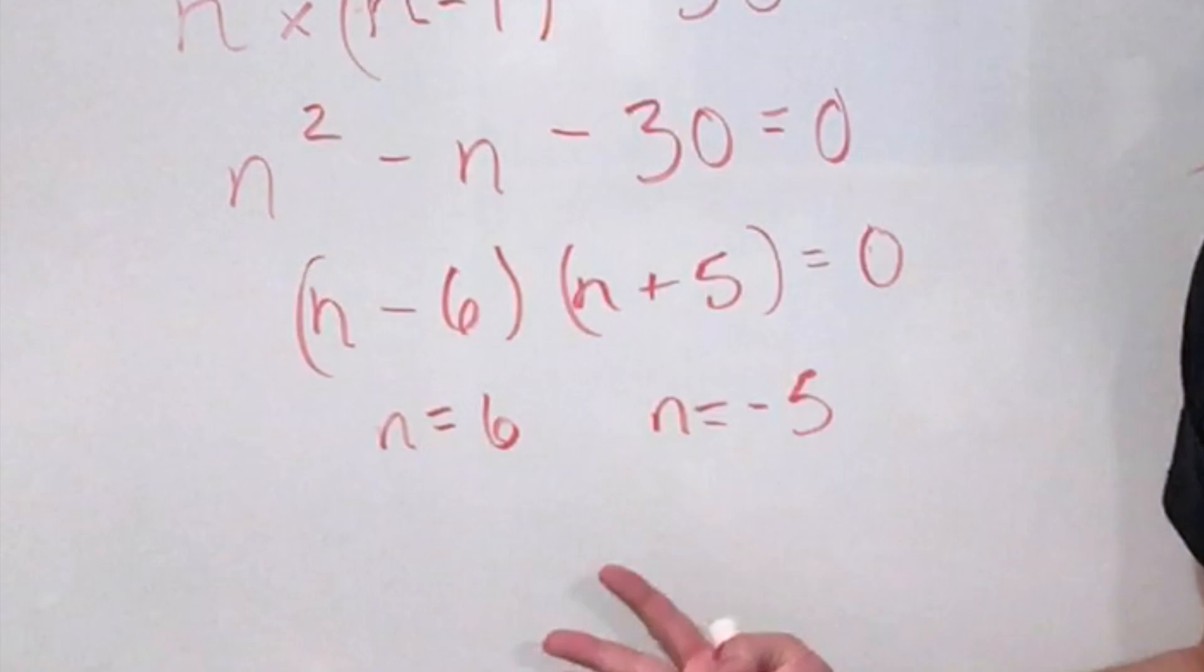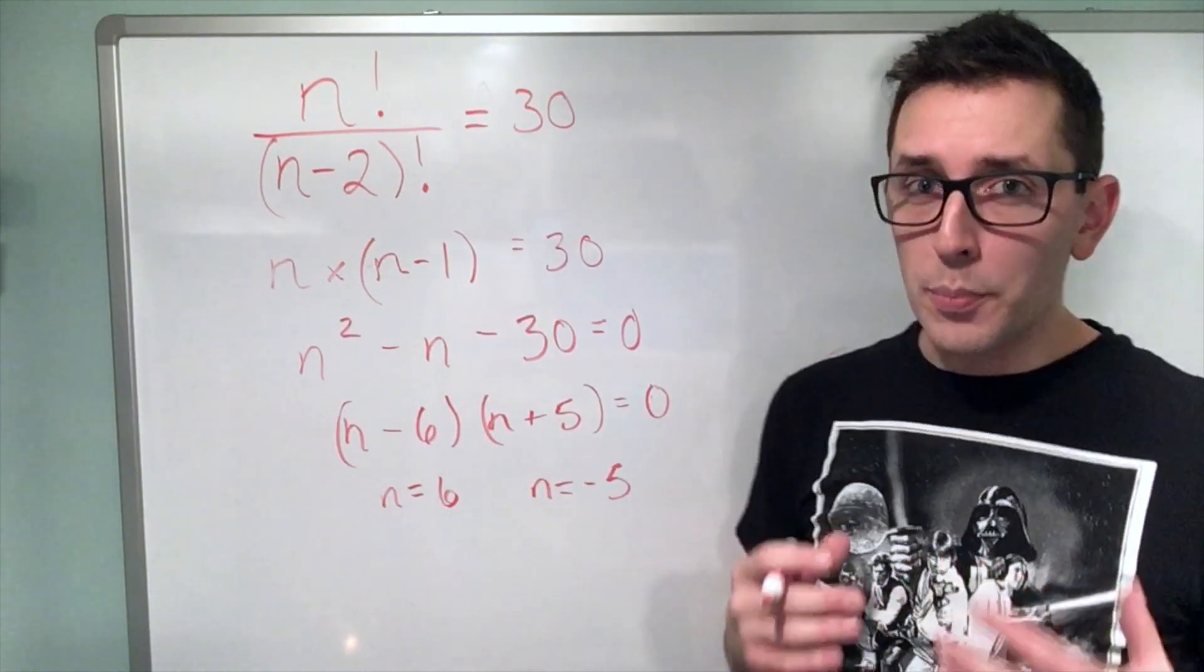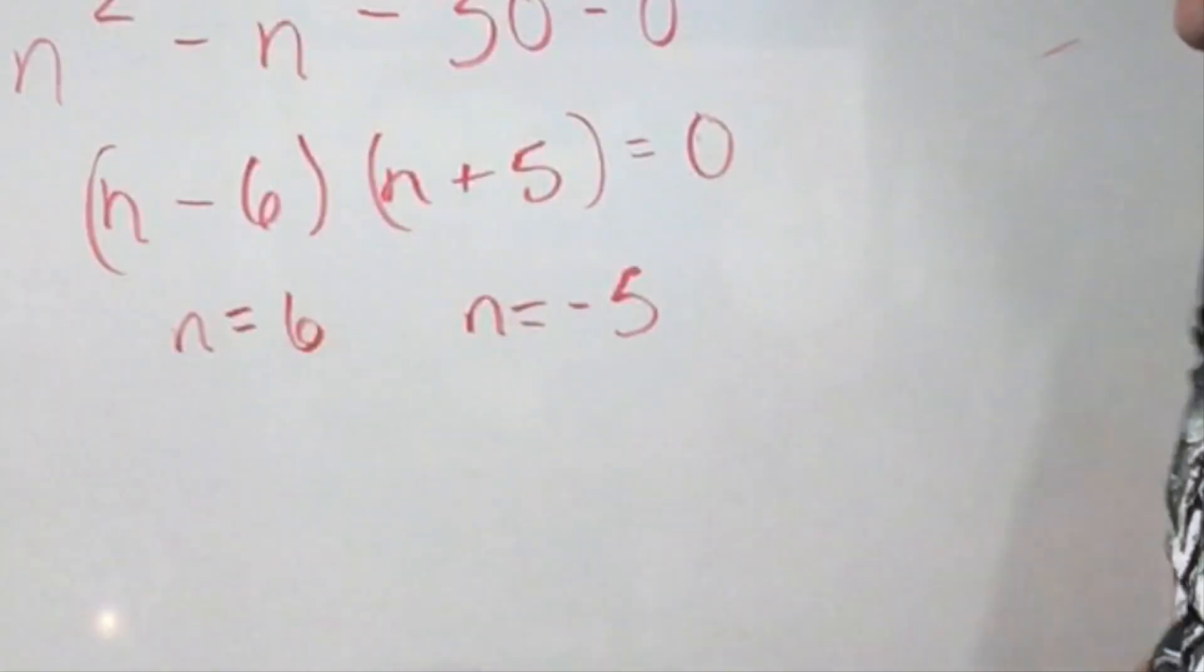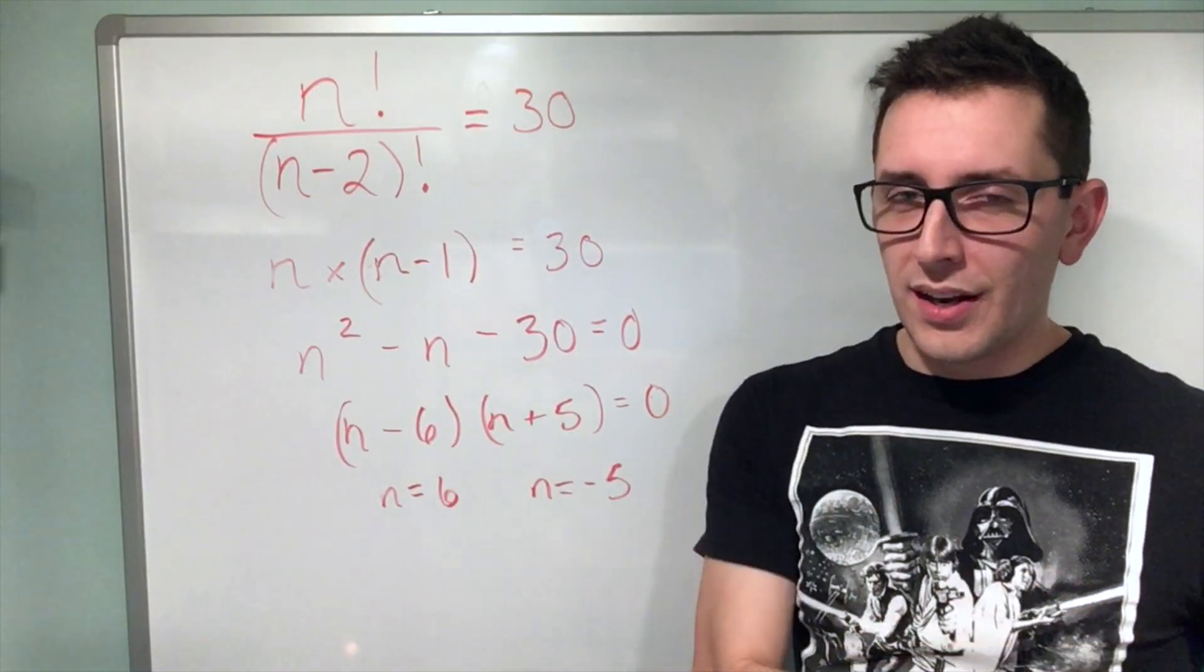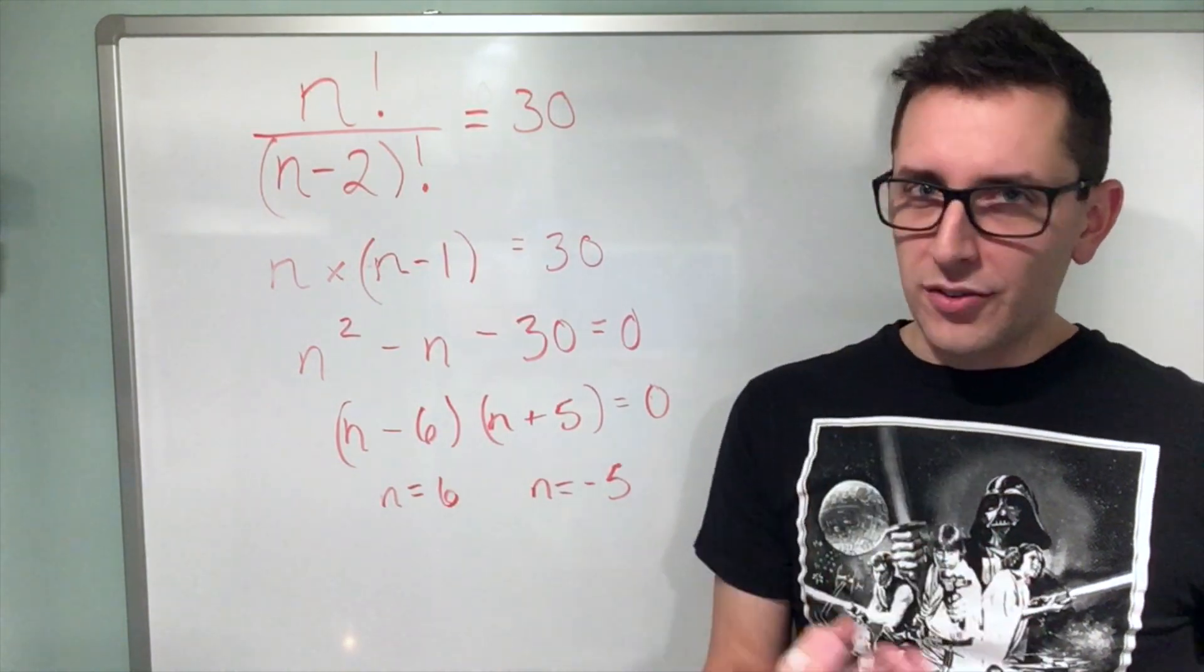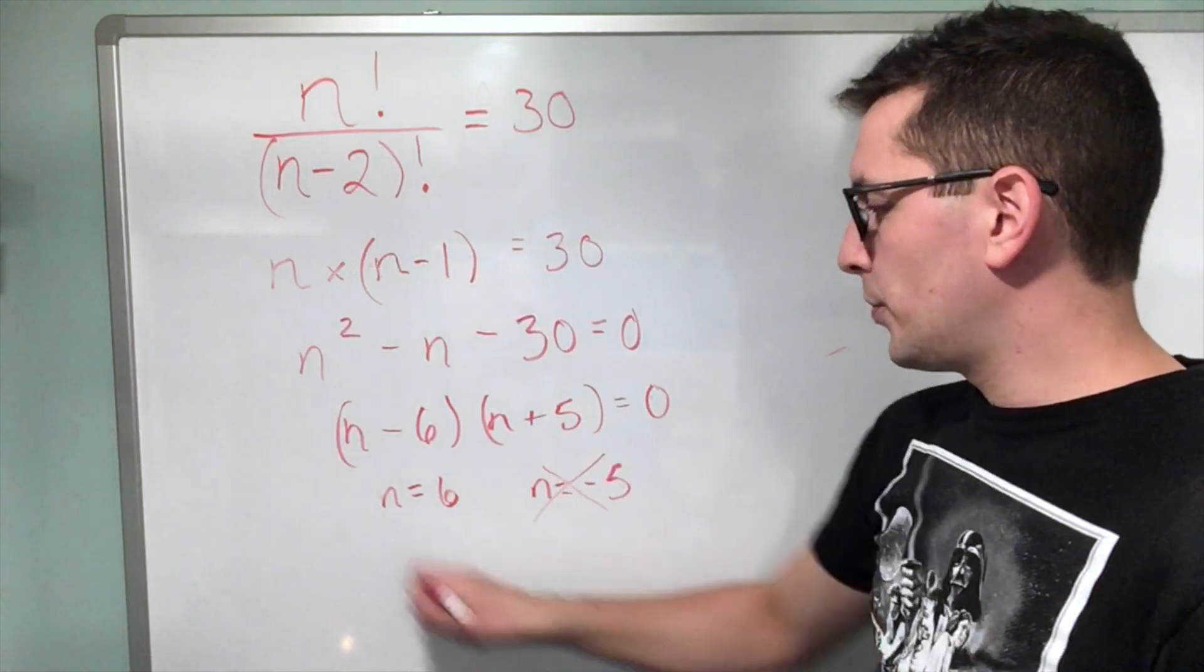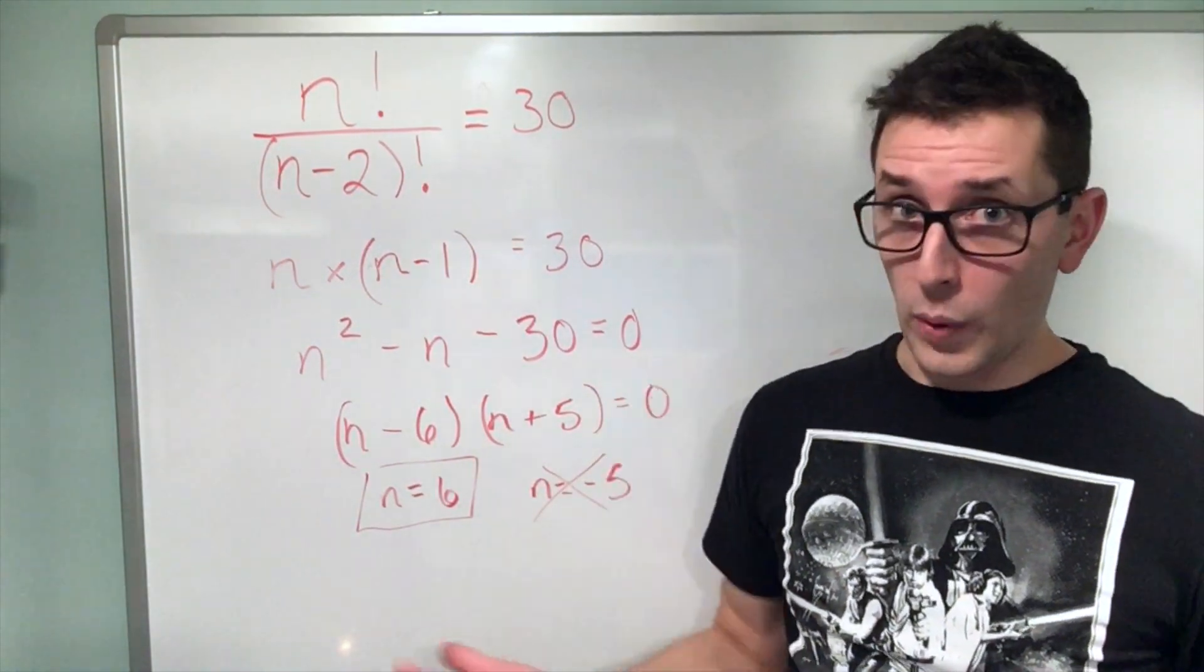And so I've determined two solutions to this equation. But what I do have to do is consider the original problem which contained factorials. The factorial operation is not defined for negative values. I'm not going to get into why that is here, but I can't take negative five and multiply by each value less than it until I get one. That's just not really how factorials work. You can't apply the factorial operation to a negative number. So I'm going to say that this solution is inadmissible. That leaves me with n equals six as my only solution to this equation.